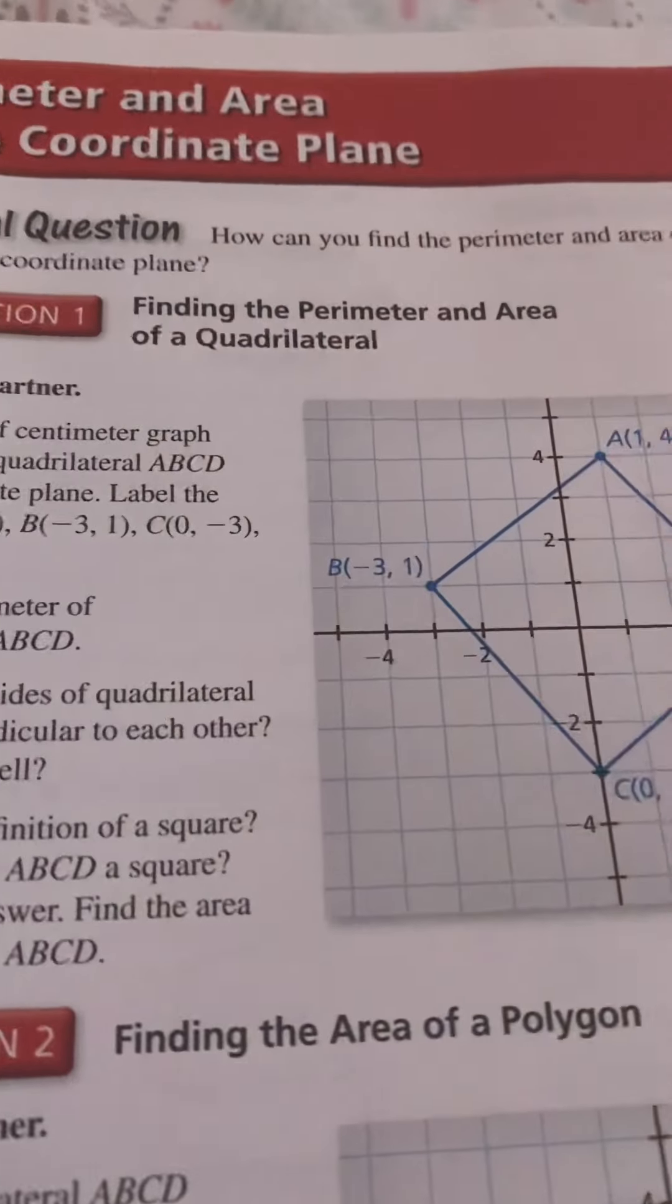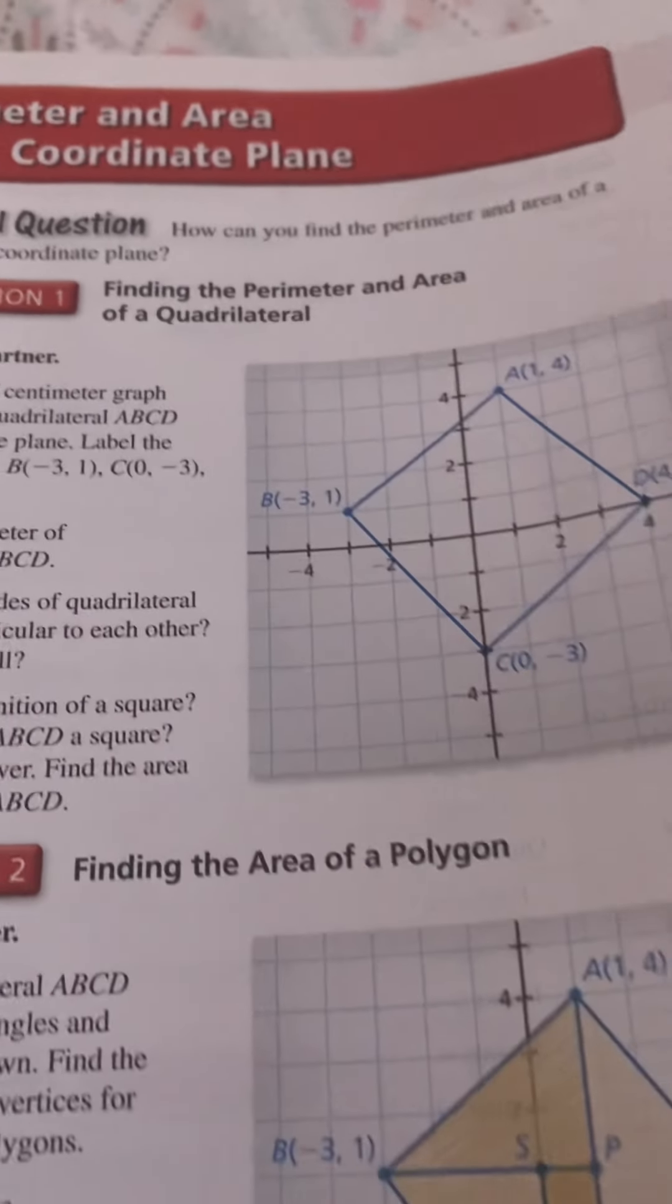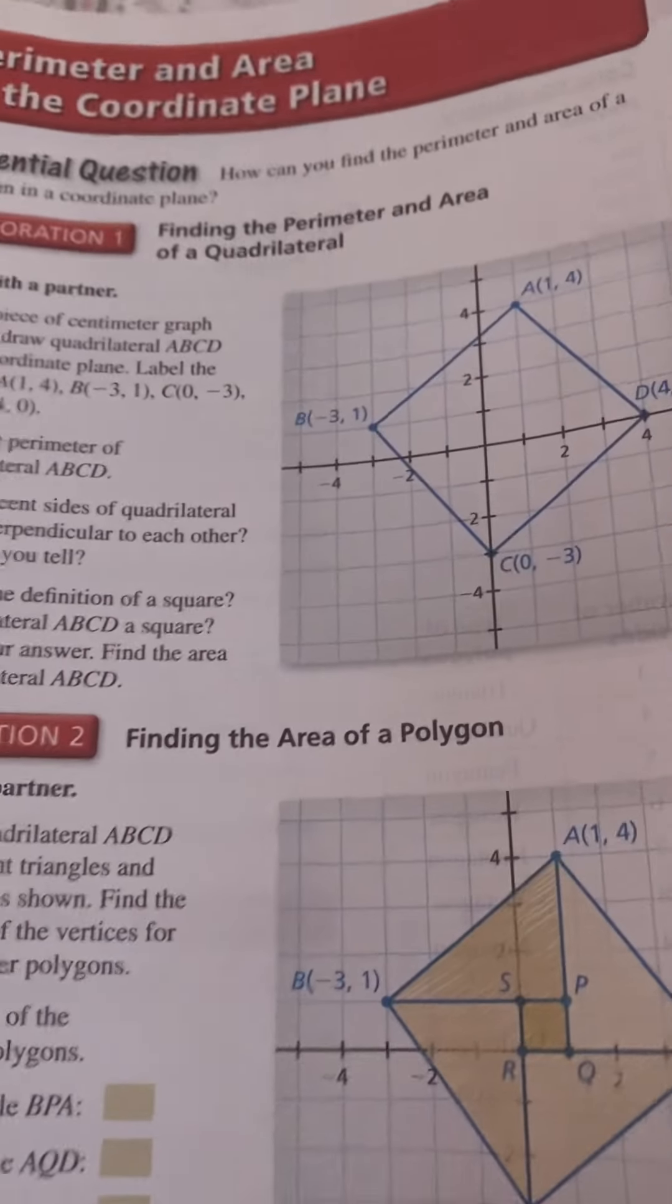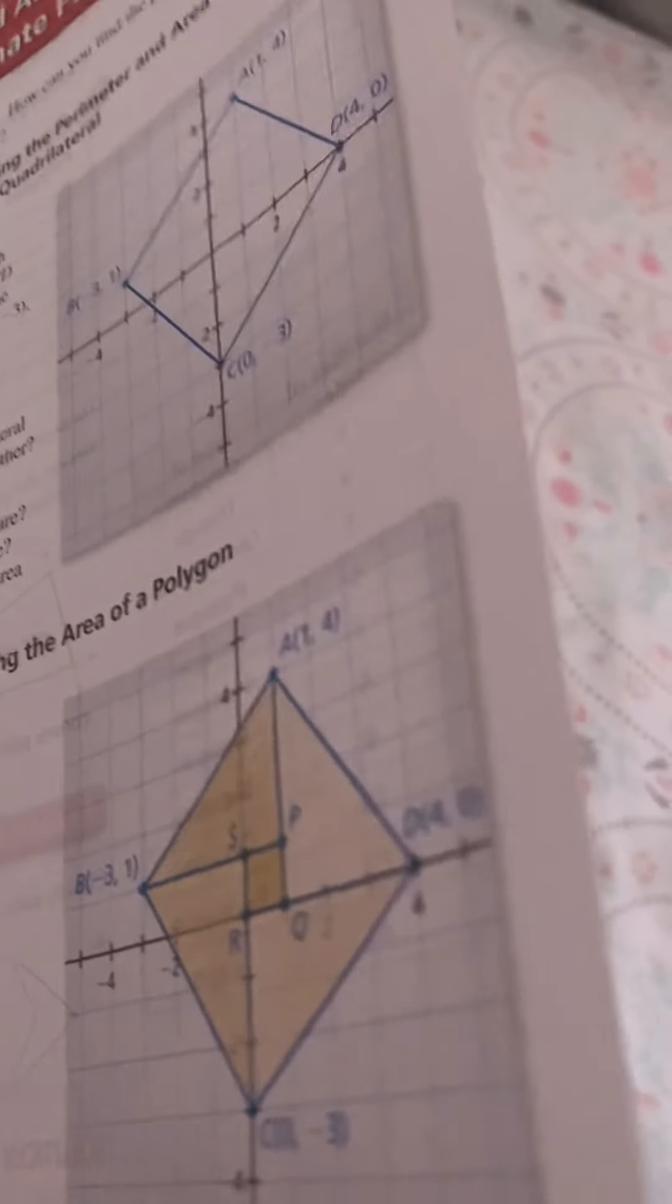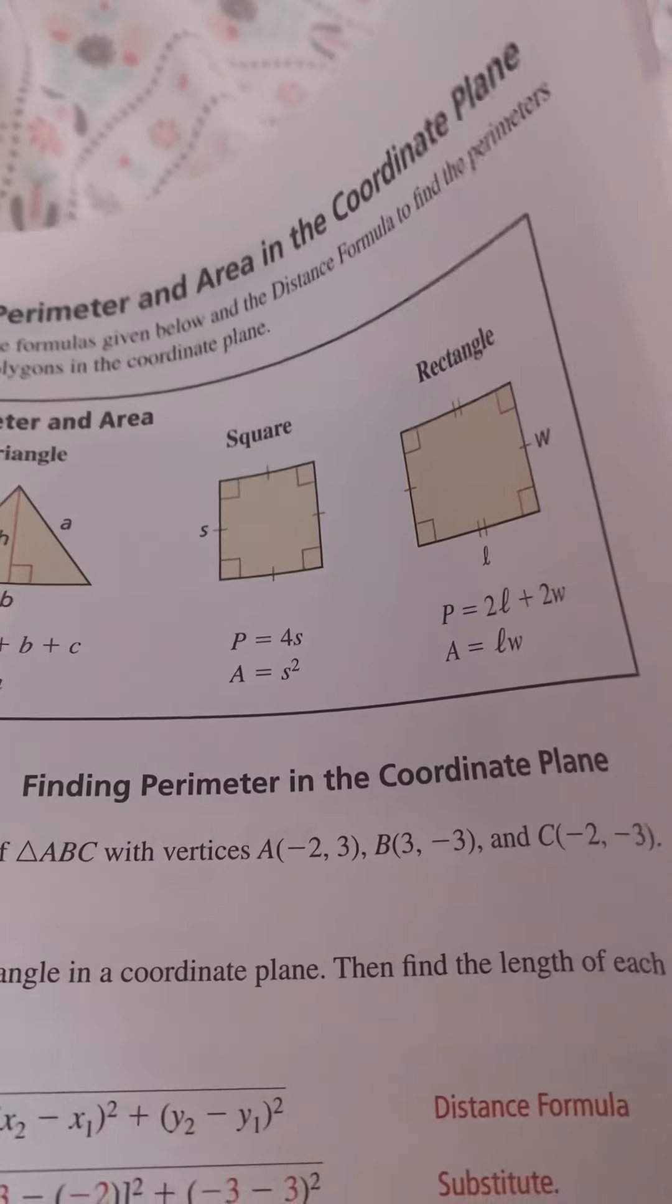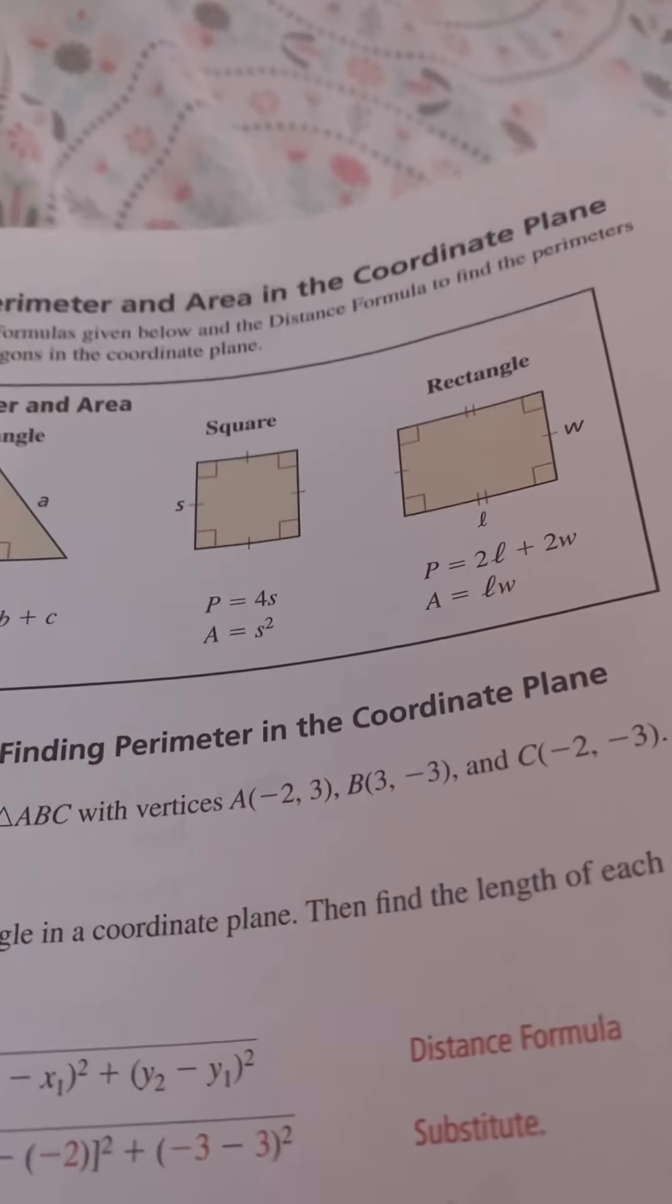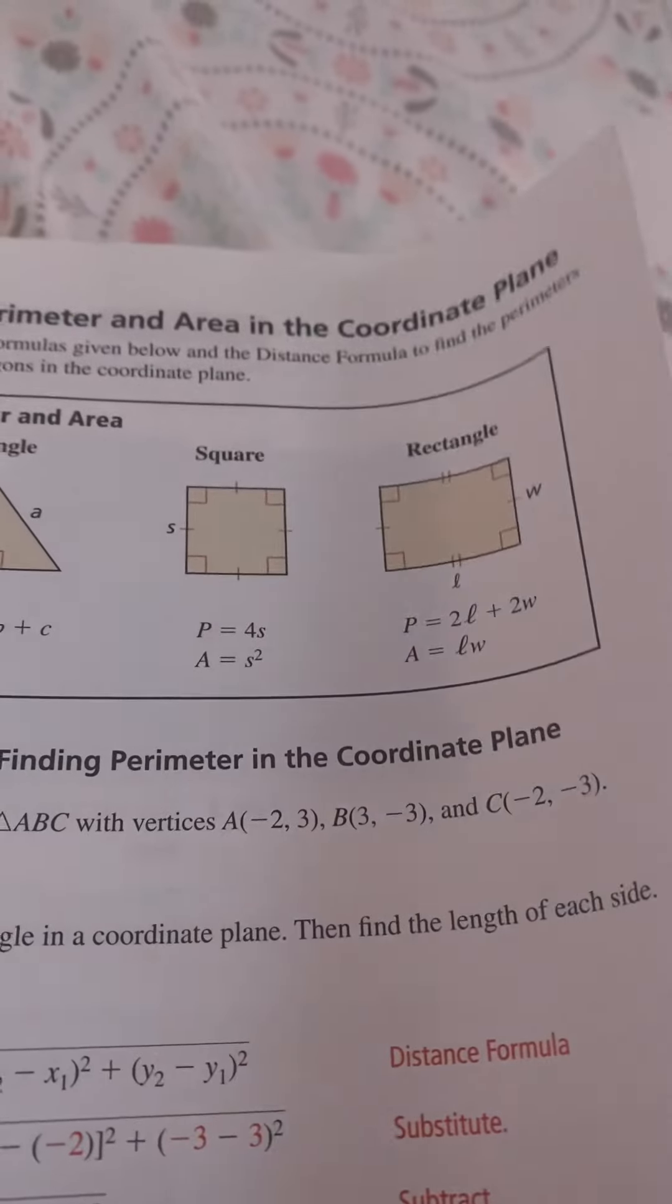1.4 Perimeter and Area in the Coordinate Plane: Looking for Structure. To be proficient in math, you need to visualize single objects as being composed of more than one object. Remember: perimeter has linear units such as feet or meters; area has square units such as square feet or square meters. Reading: You can read the notation ABC as triangle ABC.